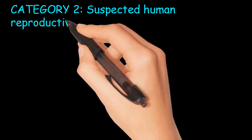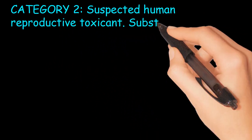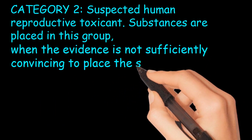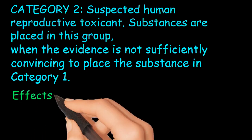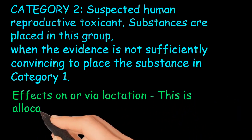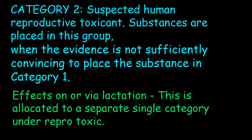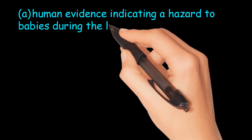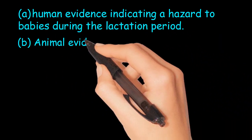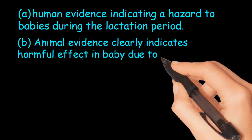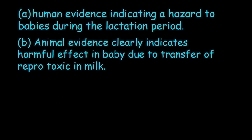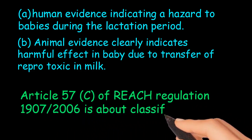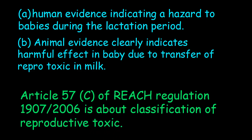Category 2: Suspected human reproductive toxicant. Substances are placed in this group when the evidence is not sufficiently convincing to place the substance in Category 1. Effects on or via lactation are allocated to a separate single category under reprotoxic: either human evidence indicating a hazard to babies during the lactation period, or animal evidence clearly indicating harmful effects in babies due to transfer of reprotoxic substances in milk. Article 57C of REACH Regulation 1907/2006 covers the classification of reproductive toxicants.